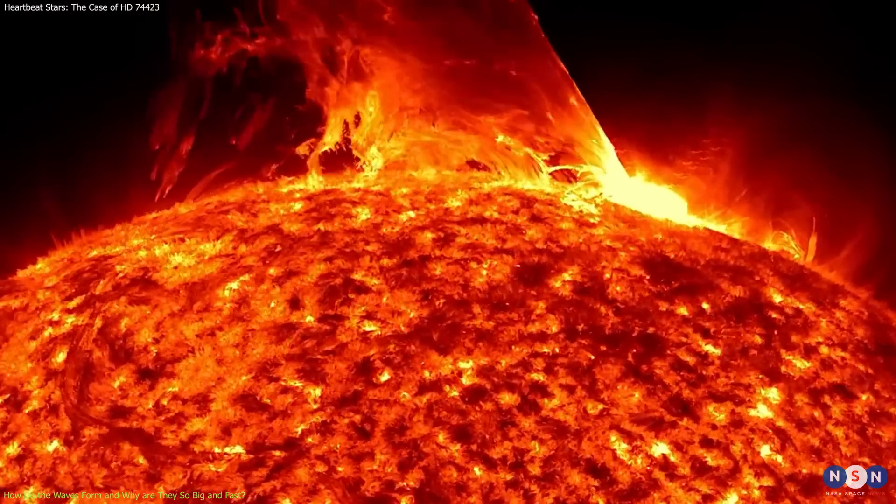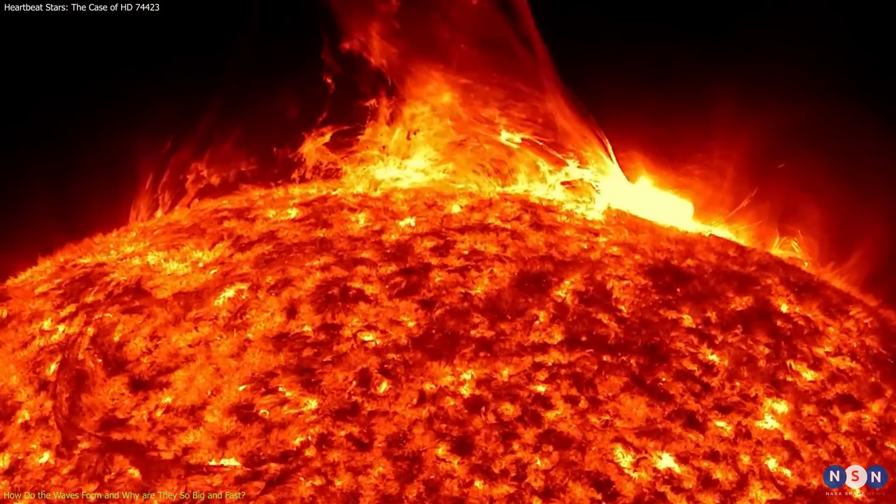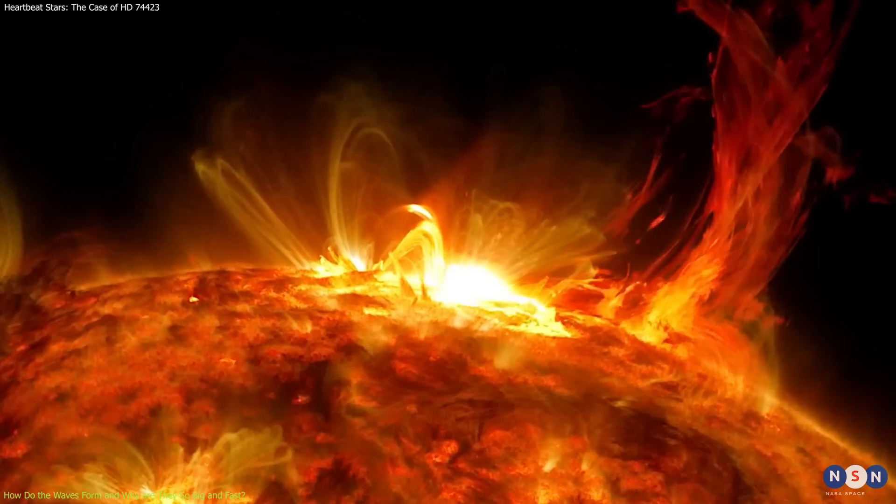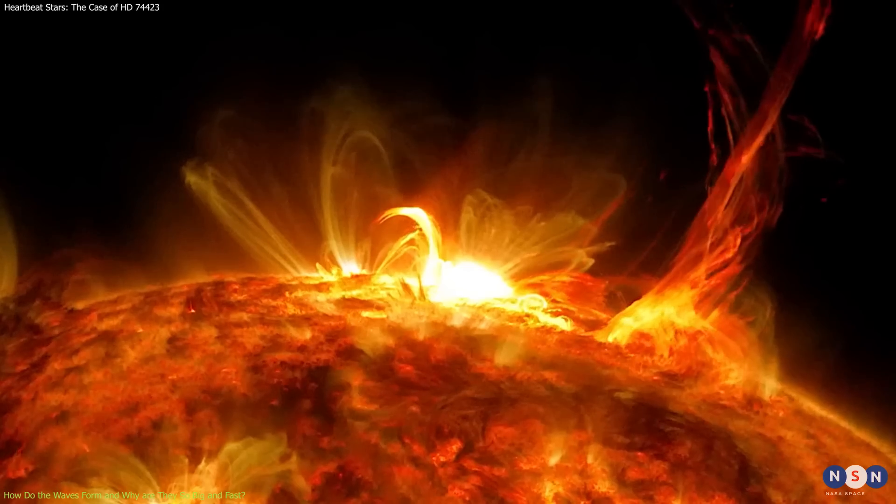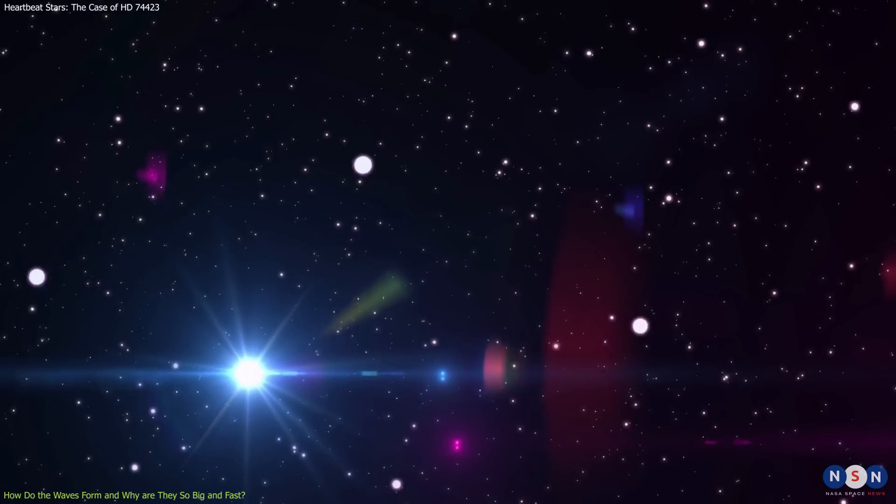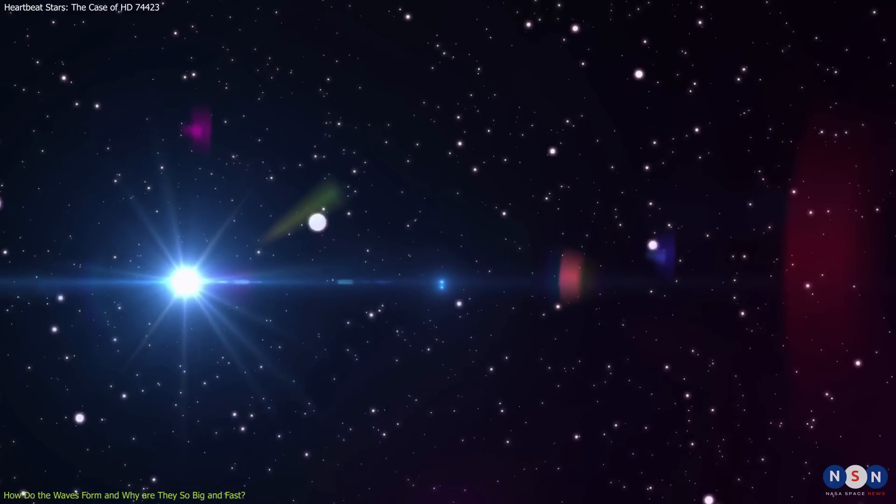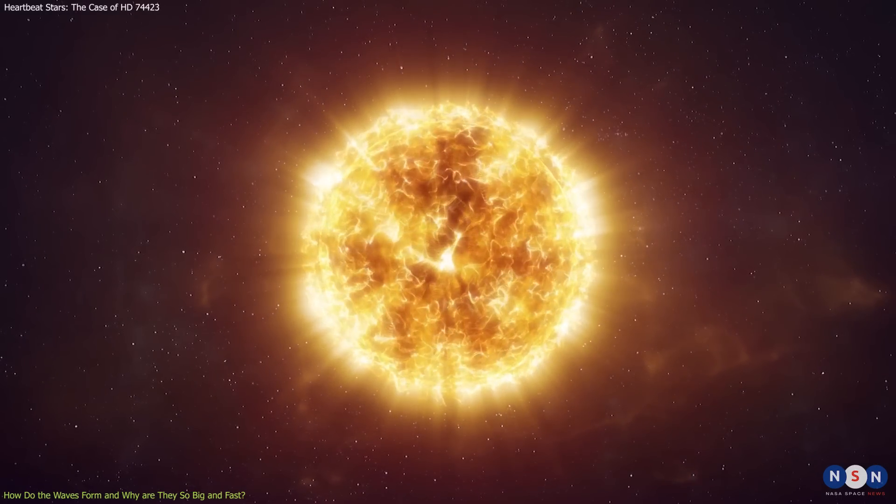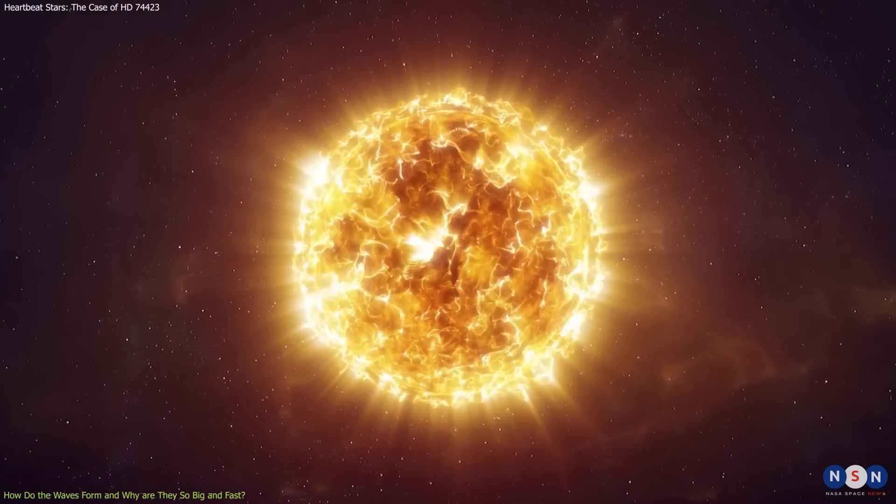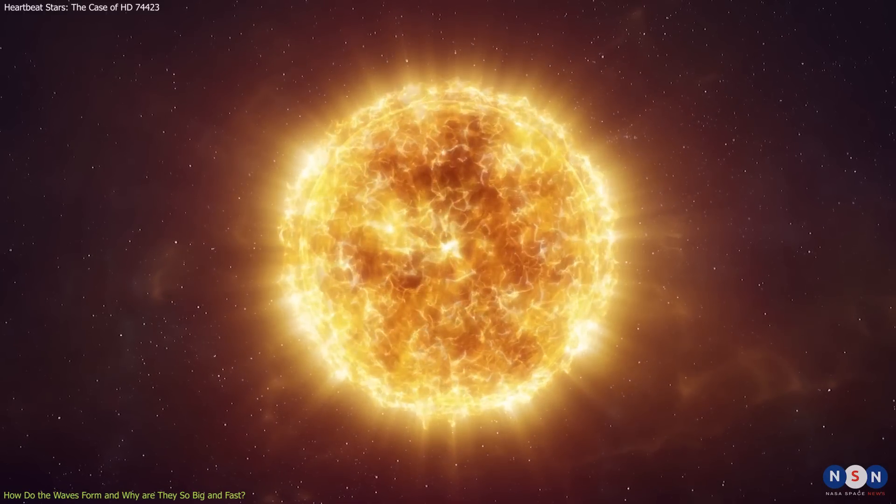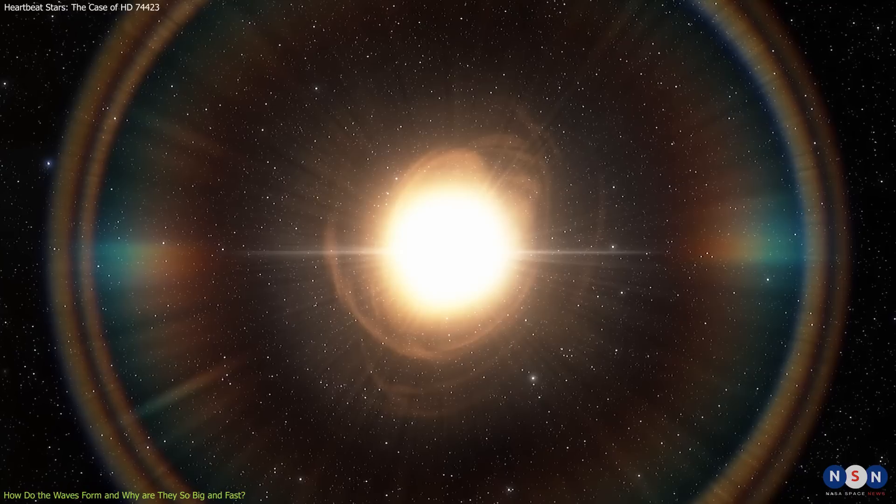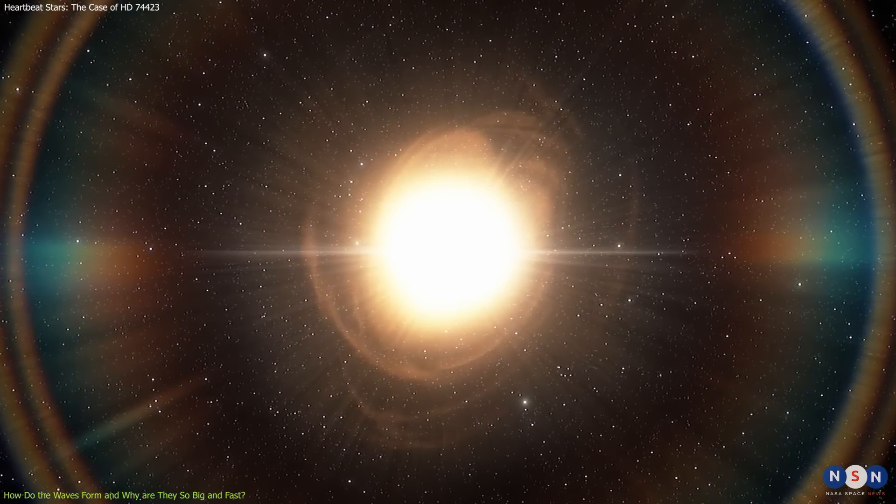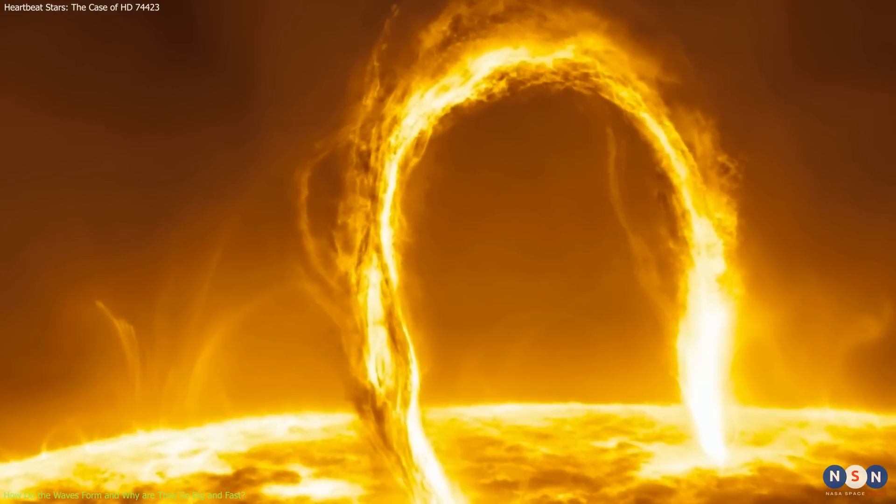The waves are so big and fast that they can reach speeds of up to 500 kilometers per second, which is about 1,800 times faster than the speed of sound on Earth. They are also so powerful that they can affect the temperature, brightness, and spectrum of the star. The temperature can change by up to 1,000 Kelvin, which is about twice as much as the temperature difference between day and night on Earth. The brightness can change by up to 10 percent, which is about 100 times more than the brightness change caused by sunspots on the Sun.